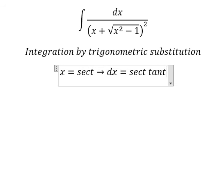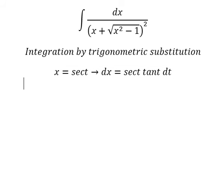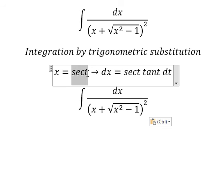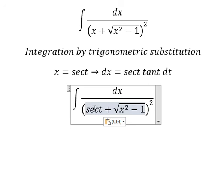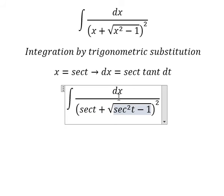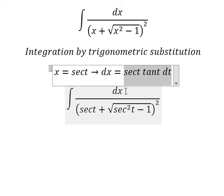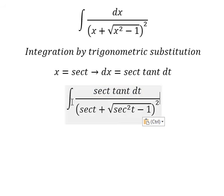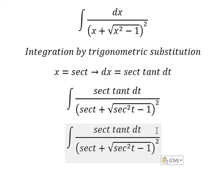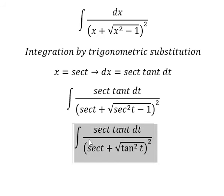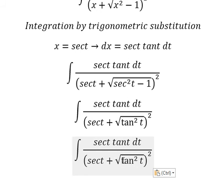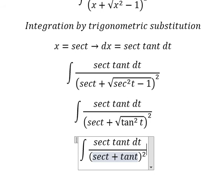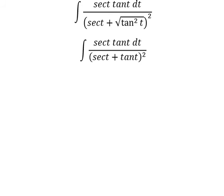Next, we differentiate both sides, and we have dx equal to sec(t) times tan(t) dt. I will substitute this in here. dx we change by this expression, and this one we change by tan²(t). The square root of tan²(t) gives us tan(t). Now we have the formula here.